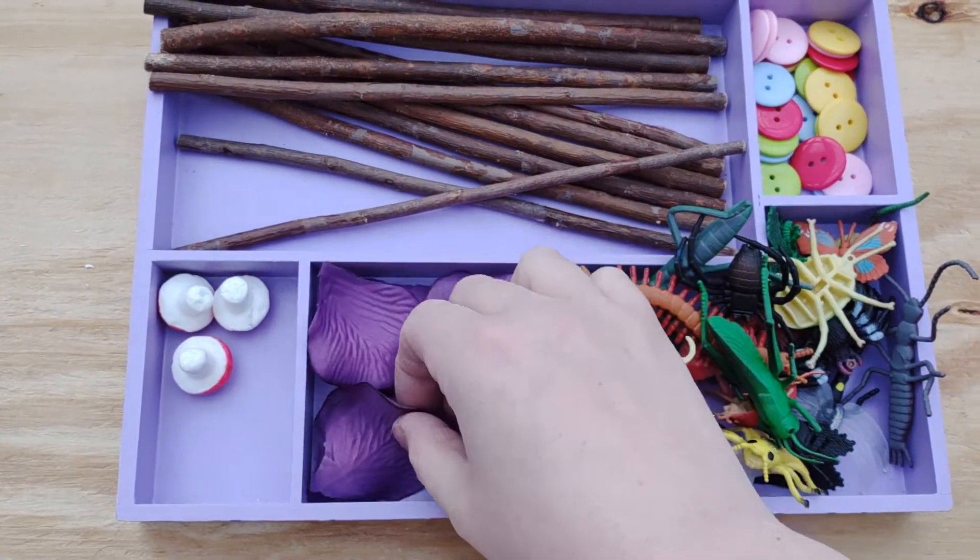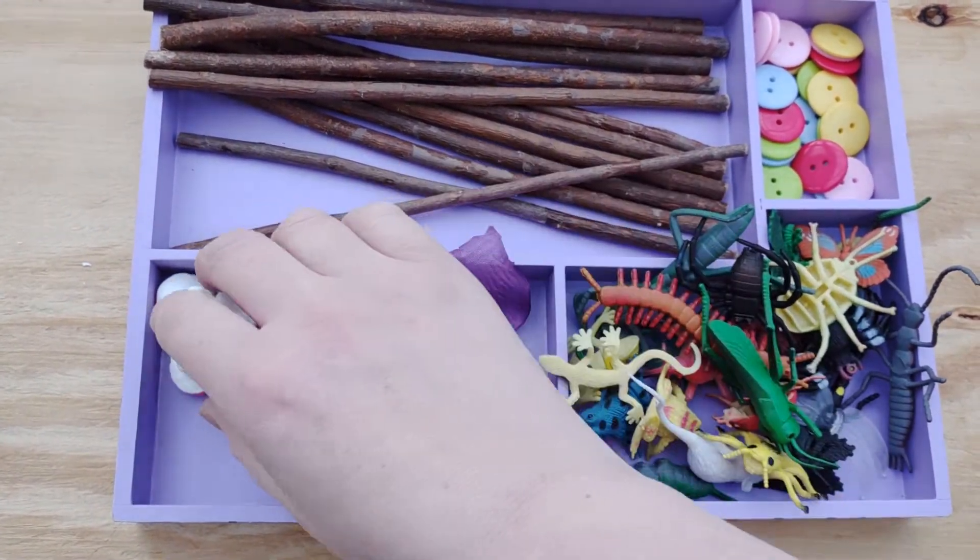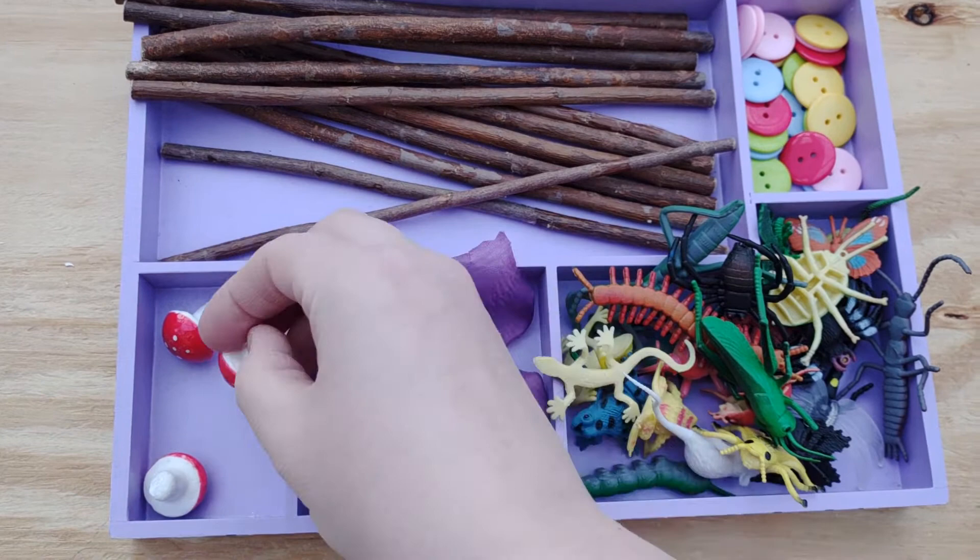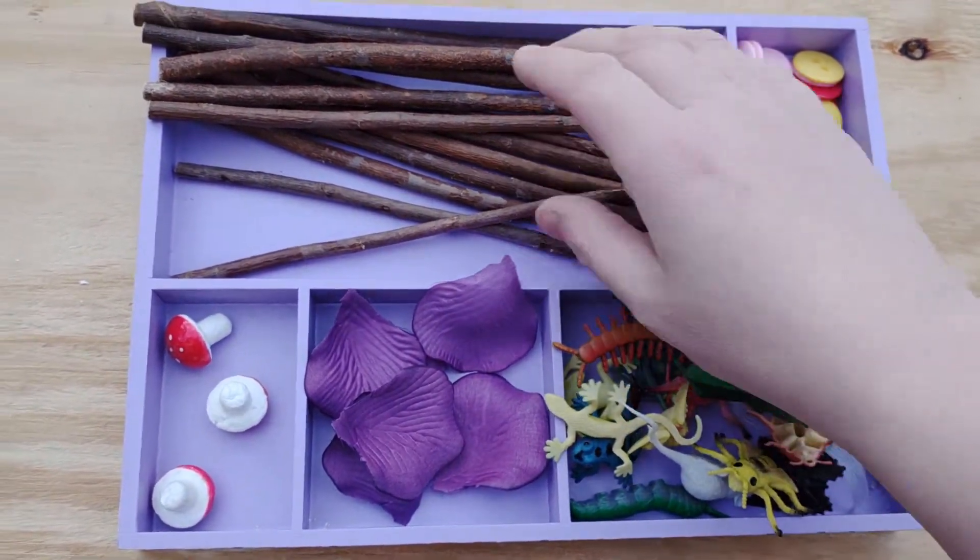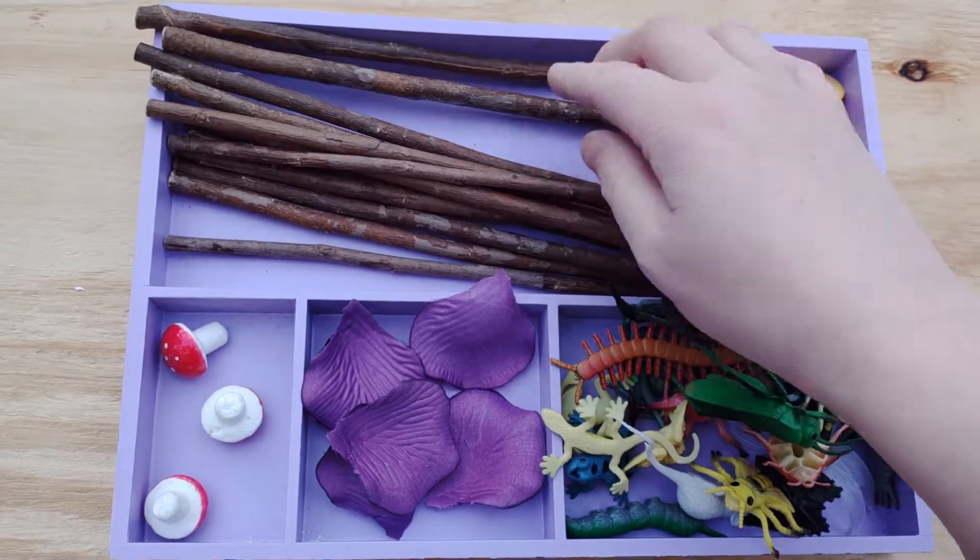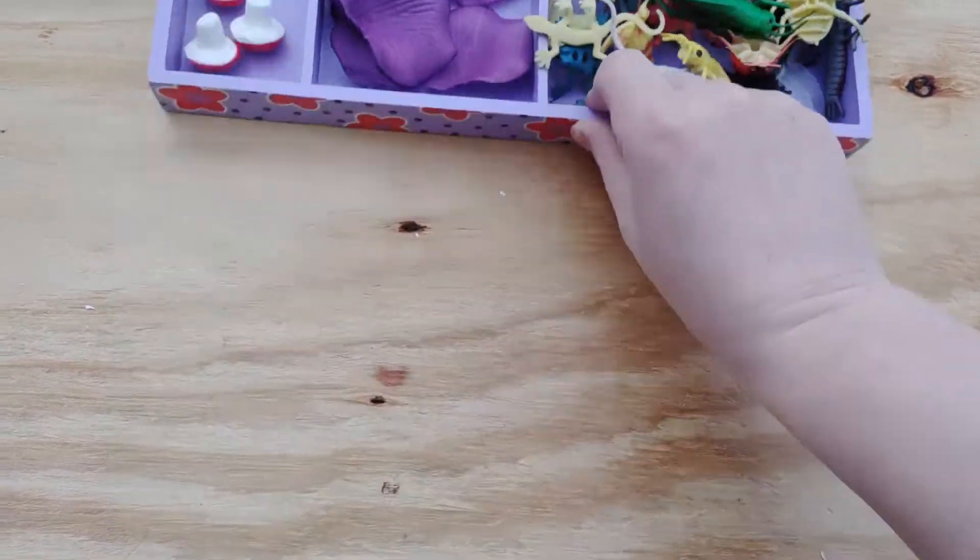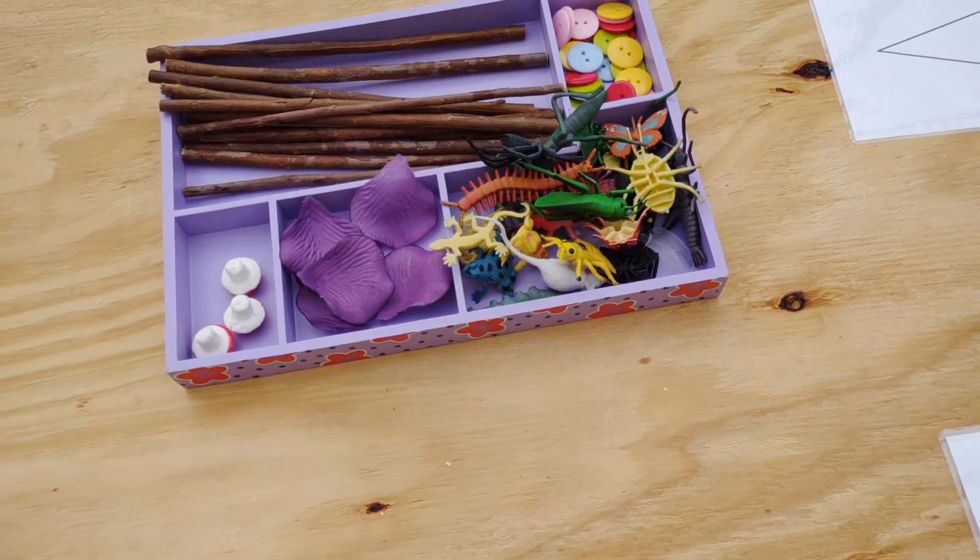So leftover petals from our wedding years ago, a few little mushrooms, got some buttons, plastic insects and some twigs. Again this is a Melissa and Doug tray that I've reused.